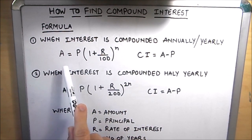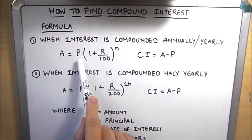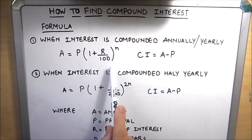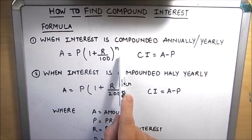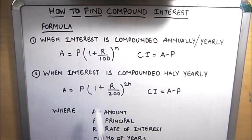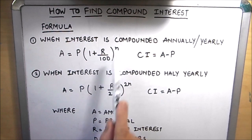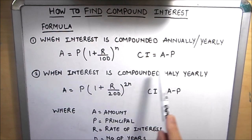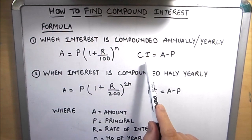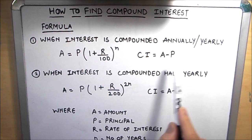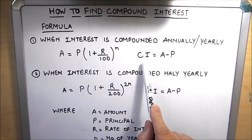The first formula is: Amount is equal to Principal times 1 plus r over 100, whole raised to power n, where A is the amount, P is the principal, r is the rate of interest, and n is the number of years. Once we get the amount, we use the formula Compound Interest equals Amount minus Principal.